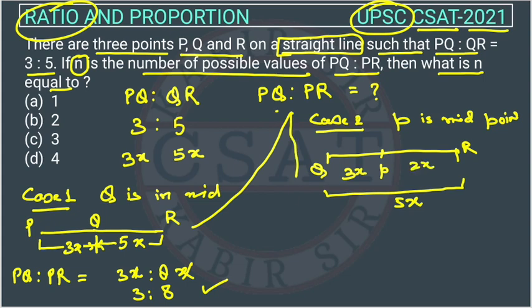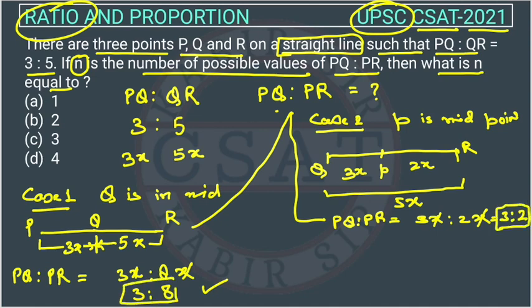Now the ratio, we have to find this PQ:PR. PQ is 3X and the PR is 2X. This X will get cancelled, so the ratio is 3 is to 2. This is the second value, this is the first value.